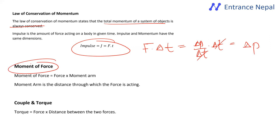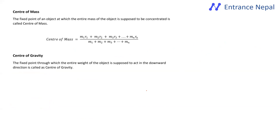Impulse equals the change in momentum; they have the same dimensions and units. The moment of force — torque — is force into the perpendicular distance from the axis of rotation, which relates to the moment of arm.